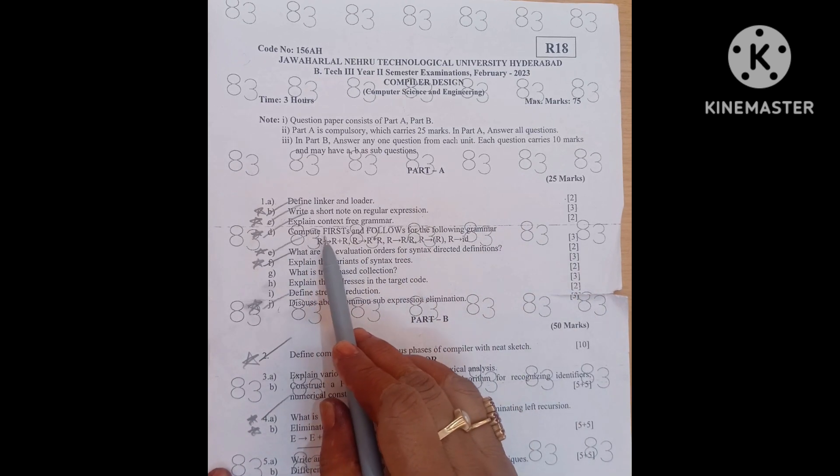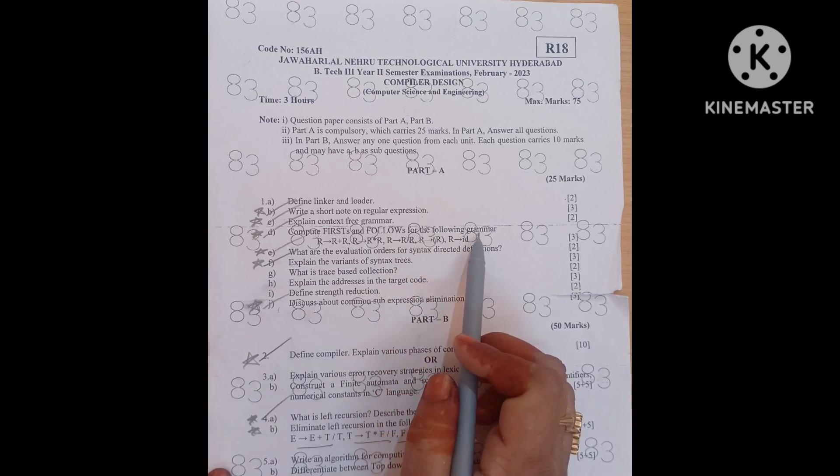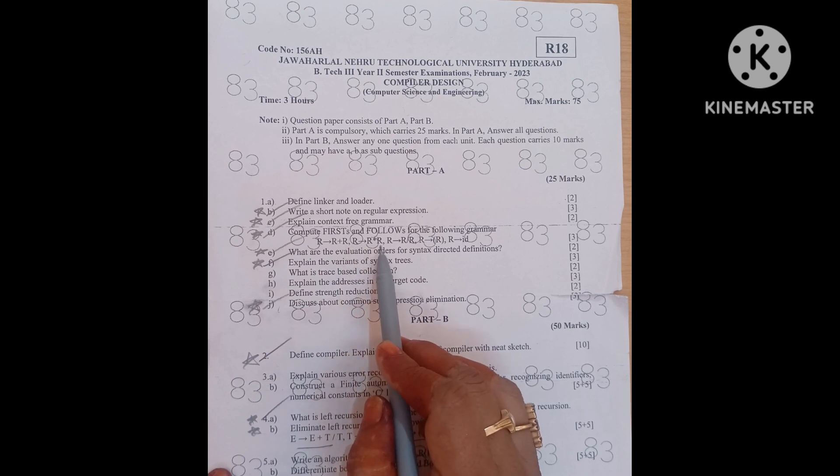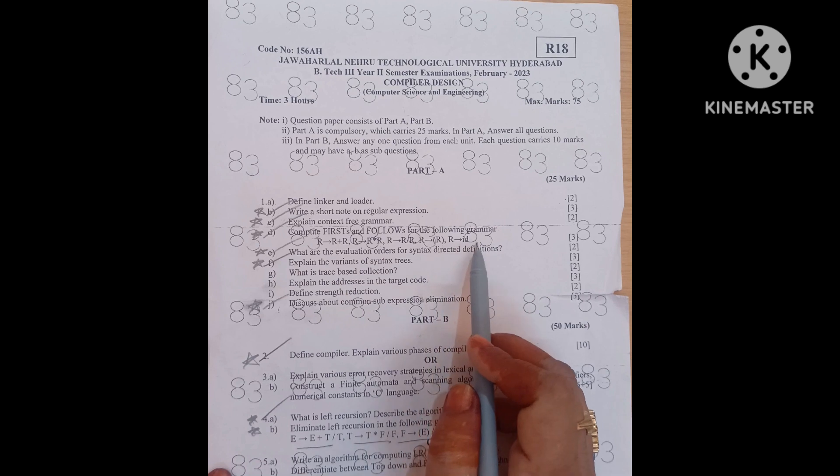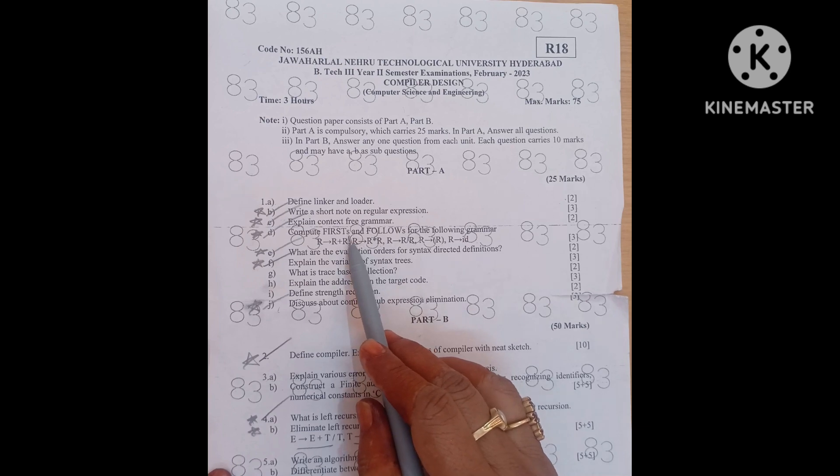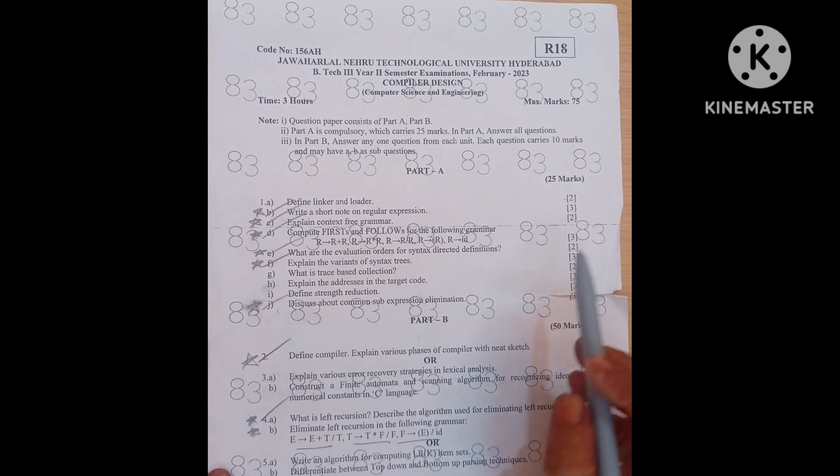Next one is compute firsts and follows for the following grammar. R to R plus R plus R, R to R into R, R to R by R, R to R and R to ID. Here one thing we have to remember, whatever the example, you have to know how to find out firsts and follows for any grammar. That is a 3 marks question.